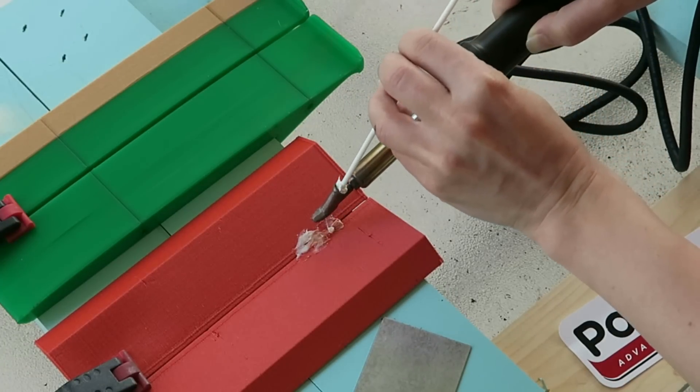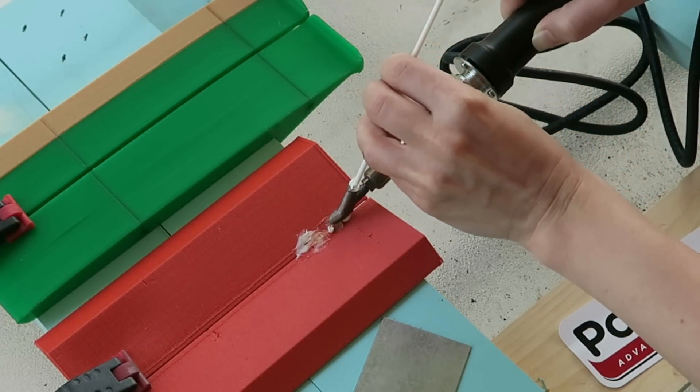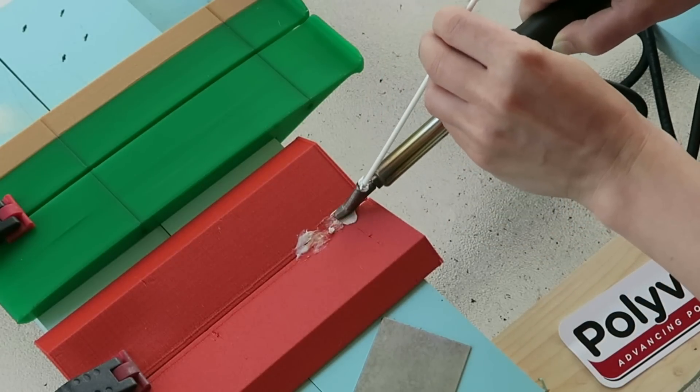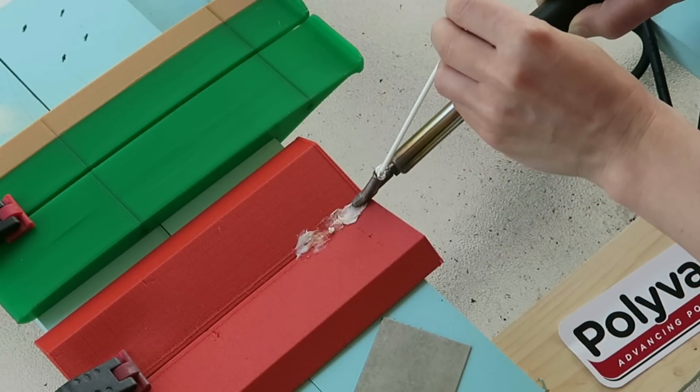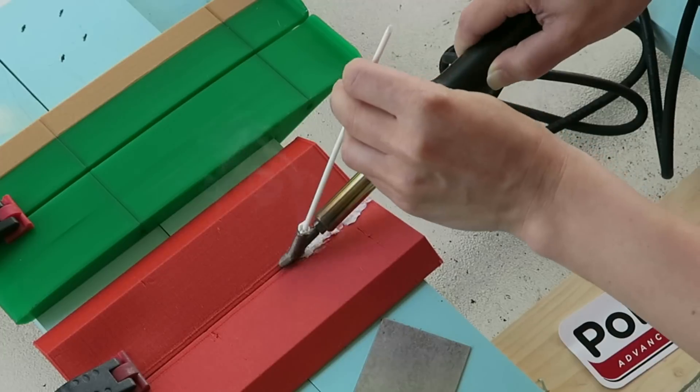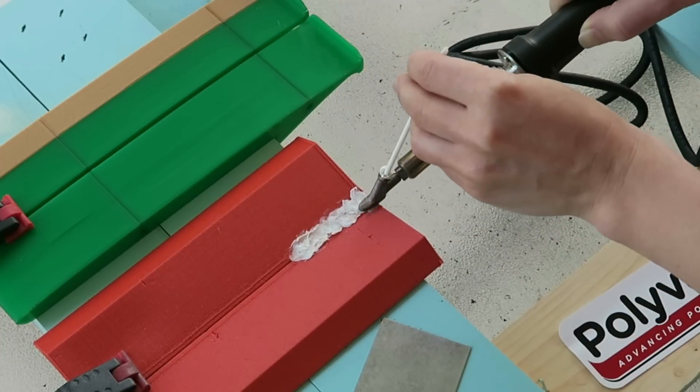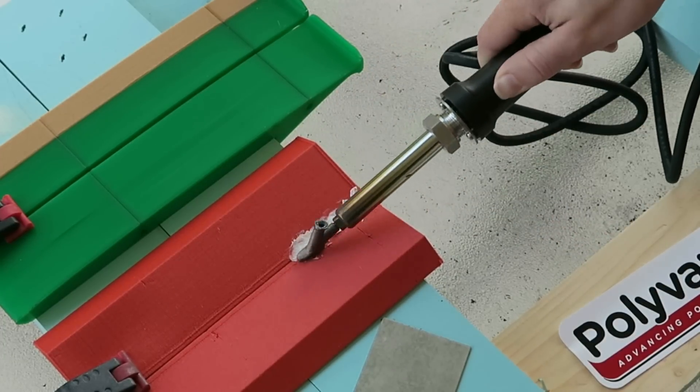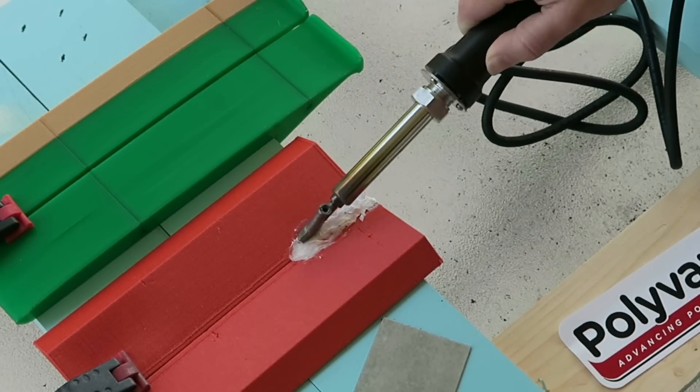Once a section of seam is covered in ABS, I'm free to go back over that area to smooth it out. The instructions recommended melting the hot tip into the piece you're welding to mix some of the source material in with the newly added plastic to get the best bond, but for most 3D print applications, that's probably not going to be practical.